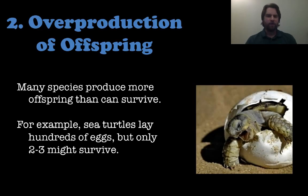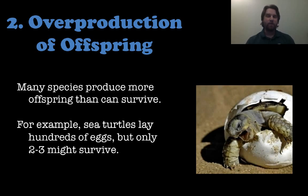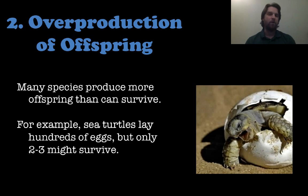The next principle is overproduction of offspring. Many species produce more offspring than can actually survive. A great example is sea turtles — they may lay hundreds and hundreds of eggs, but maybe only two or three of those become adult sea turtles, because the eggs don't hatch, they don't survive the trip from the nest to the ocean, or they get eaten. By producing many offspring, at least a few survive into adulthood.